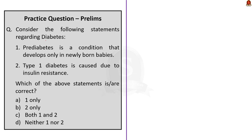Question 2 is regarding diabetes — it asks for the correct statement. Statement 1: Pre-diabetes is a condition that develops only in newborn babies — this is incorrect; it can also develop in older humans. It is just a condition of elevated blood sugar levels and is technically not a type of diabetes but a pre-condition that can translate into diabetes. Statement 2: Type 1 diabetes is caused due to insulin resistance — this is incorrect. Type 1 is caused by an autoimmune condition, genetics, and environmental factors. Insulin resistance causes Type 2 diabetes. The correct answer is option D: neither 1 nor 2.